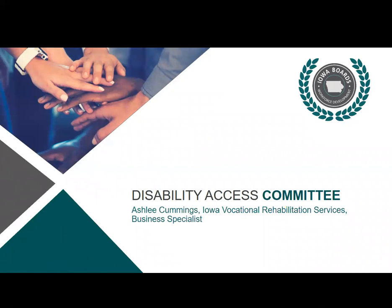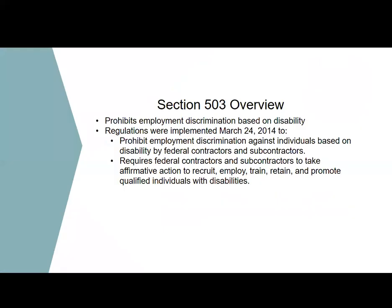My name is Ashley Cummings. I'm with Iowa Vocational Rehabilitation Services and I am the Business Specialist. Today we are going to be talking about Section 503. Section 503 prohibits employment discrimination based off of disability. Regulations were implemented on March 14, 2014, and they prohibit employment discrimination against individuals based on disability by federal contractors and subcontractors.